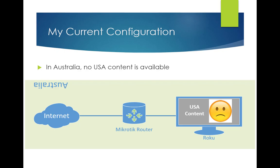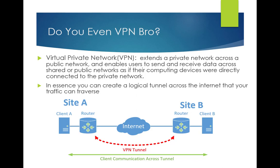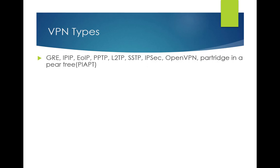My current configuration: Roku goes through my MicroTik router straight to the internet and I can't get to that US content — it's blocked. So a VPN tunnel is going to be my answer. A VPN basically creates a logical tunnel from point A to point B and dumps my data out at the far side. So I'm creating a tunnel from Australia to the US, and it will appear as if it's being sourced from the United States. There are multiple VPN types, especially on a MicroTik — they give you so many options.